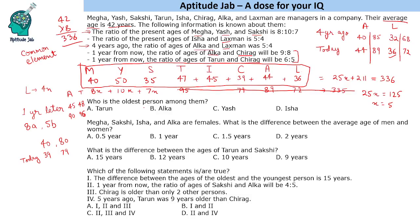The oldest person among them is Yash. Mekha, Sakshi, Isha, and Alka are the females. Their ages are 40, 35, 45, and 44, summing to 164, divided by 4 gives an average of 41. The males add to 172, divided by 4 gives 43. So the difference between the average age of men and women is 2 years.